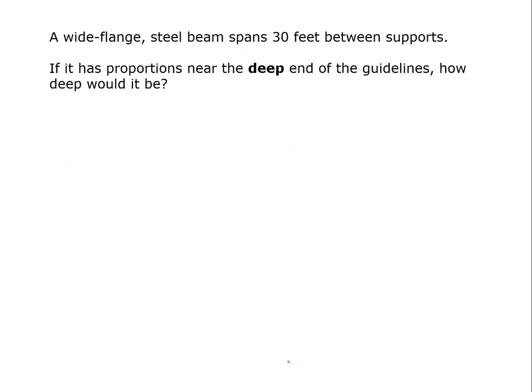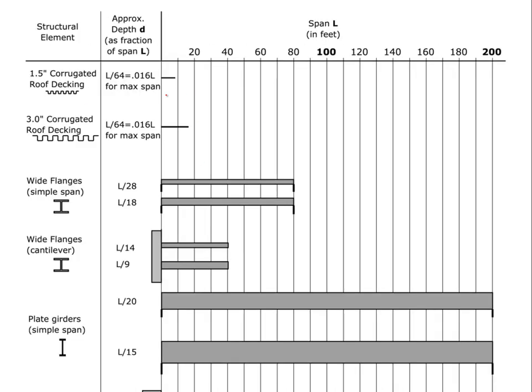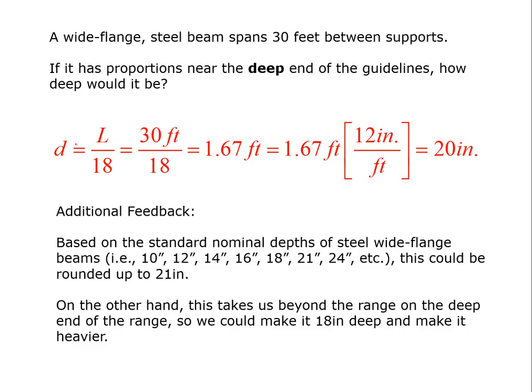So let's ask this question, if we're going to span this 30 feet again between supports, what will be the proportions near the deep end of the guidelines? So we're going to go back here, and we're going to look, and we saw for the shallow end, we were at L over 28, but now we're going to be at L over 18. So now when we run the math, we say the depth is equal to L over 18, which is 30 over 18, which is 1.67 feet. And when we convert that to inches, it comes out to 20.0 inches.